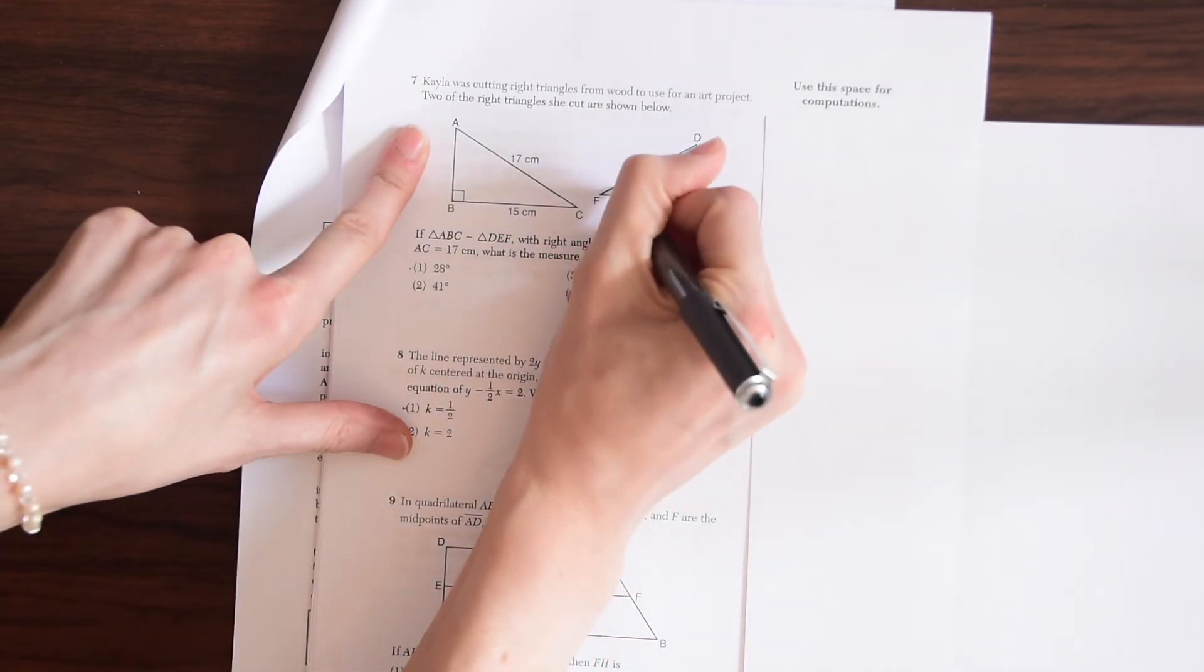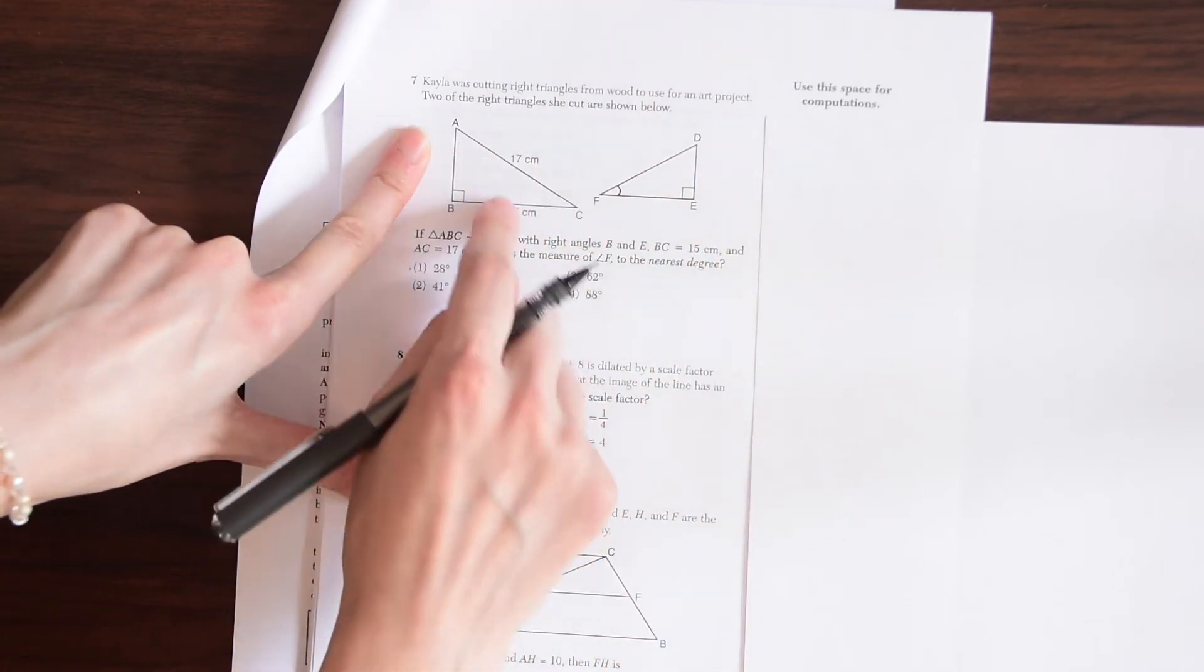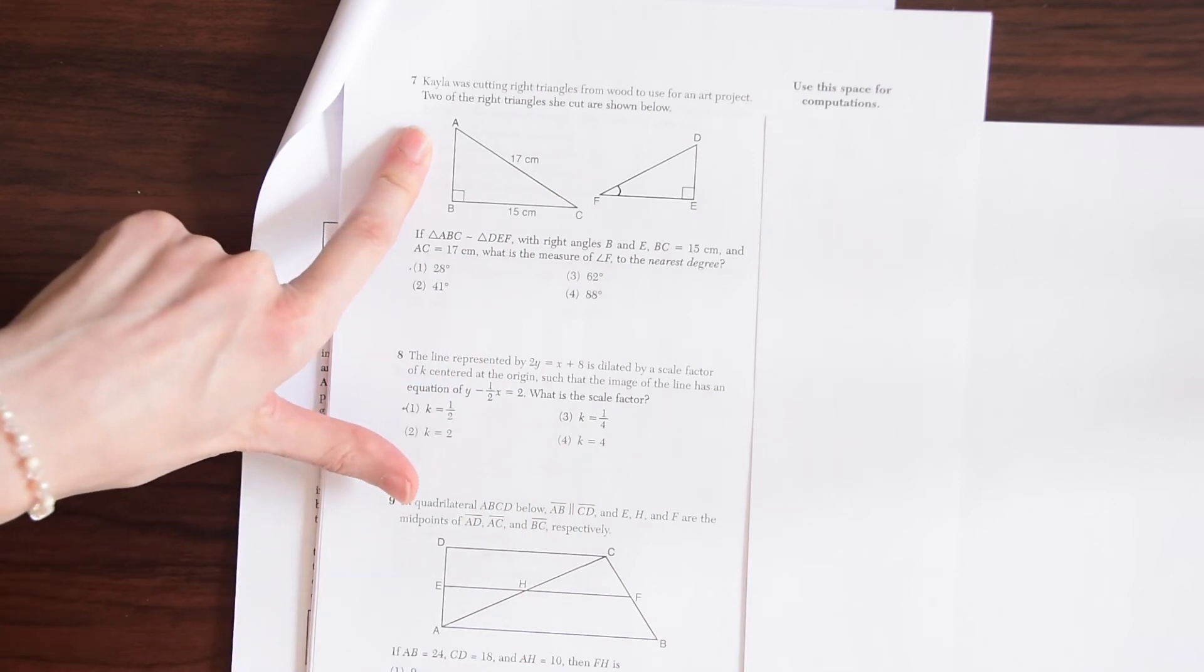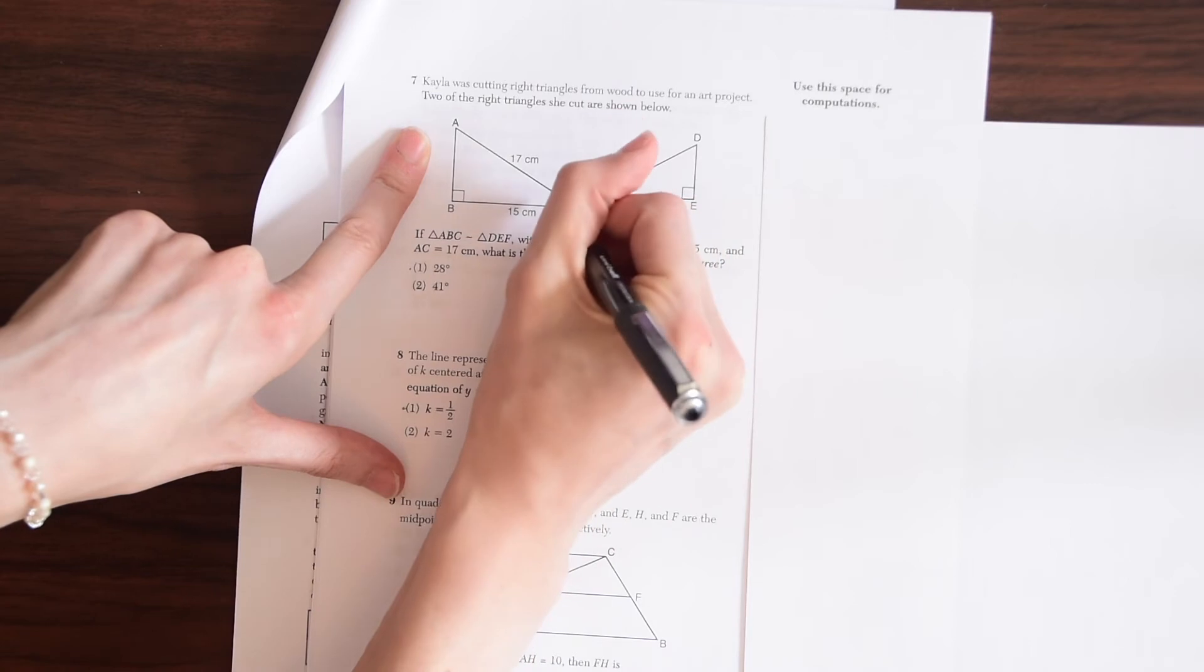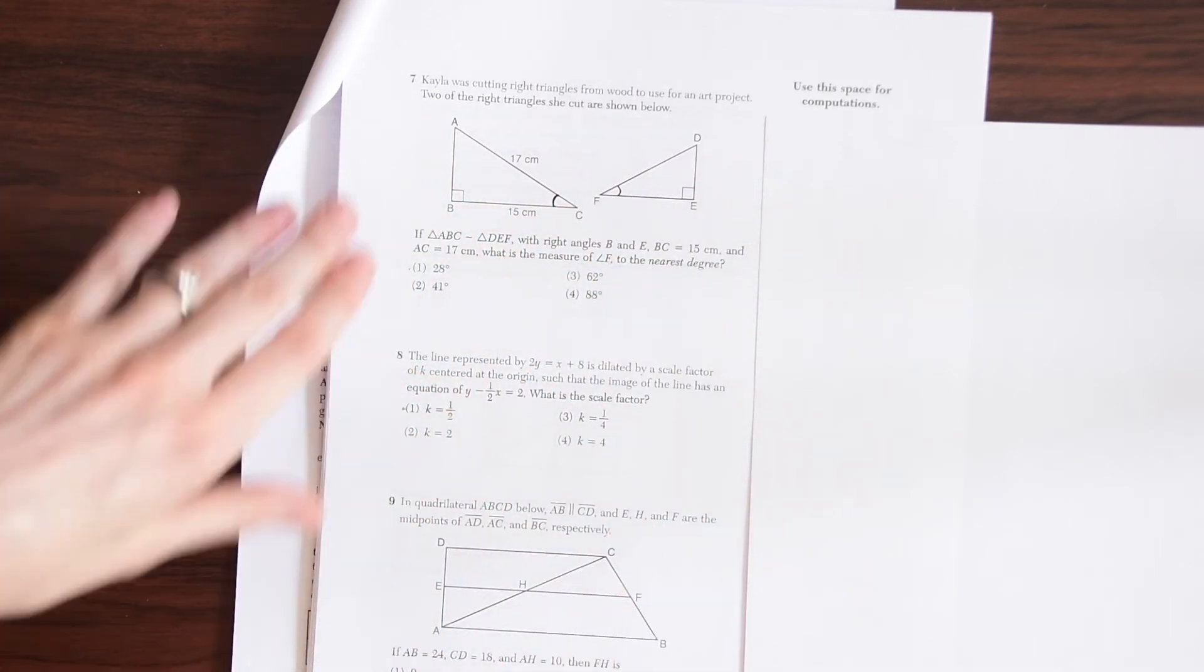So if they want to know angle F over here, we want to find the corresponding angle in this triangle because this triangle, we have the numbers, the values that can give us the value for the angle. So the corresponding angle, if you notice, is right here at angle C. So that's what we're going to be looking for when we solve this.